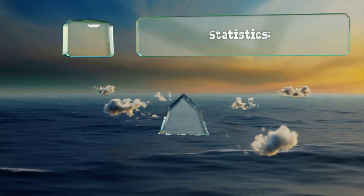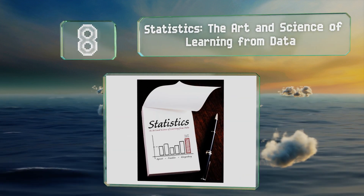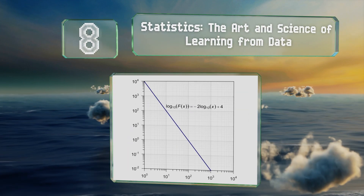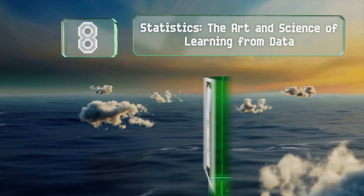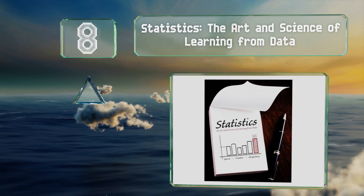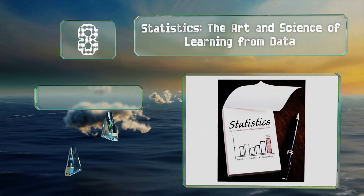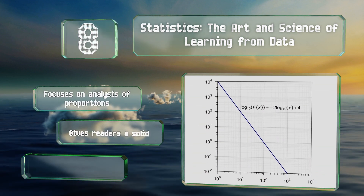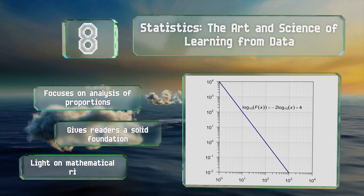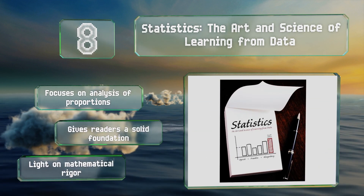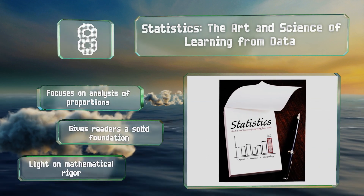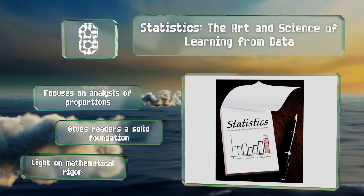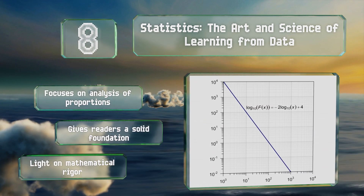Coming in at number 8 on our list, instead of concentrating on the memorization of procedures, Statistics: The Art and Science of Learning from Data takes a conceptual approach, teaching students to ask the correct questions when analyzing information. It's both accessible and enlightening. It focuses on the analysis of proportions and gives readers a solid foundation. However, it is light on mathematical rigor.